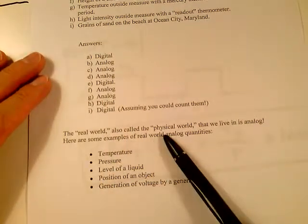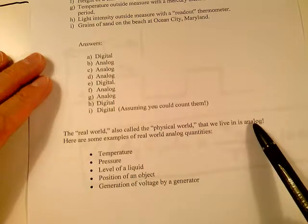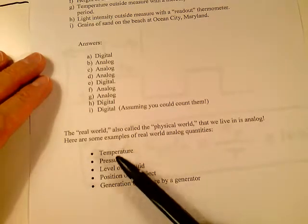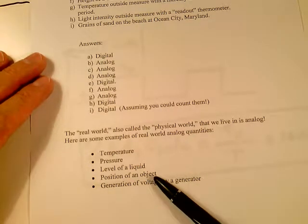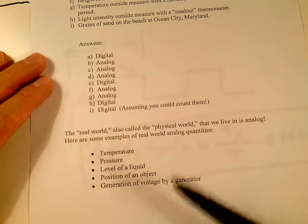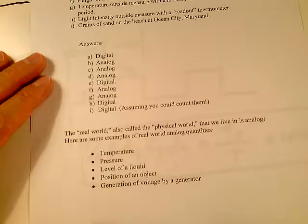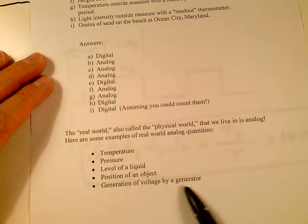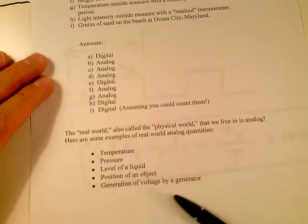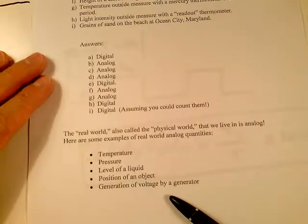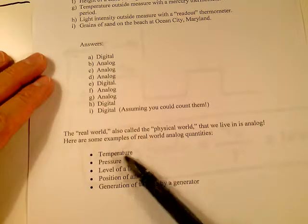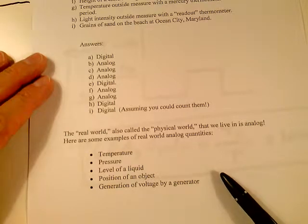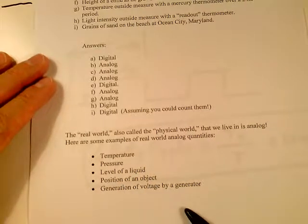Down at the bottom of page four, it says the real world, also called the physical world that we live in. And it's an analog world. All these different temperature, pressure, levels of a liquid in a tank, position of an object on a conveyor belt, or an angular position from zero to 360 degrees. In the real world, generation of voltage or current. In the real world, these are all analog. Think about it. They're all analog representations. The physical quantity that can be measured is analog.